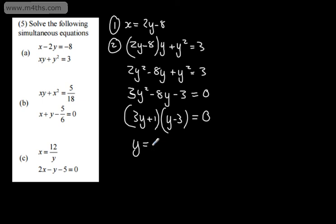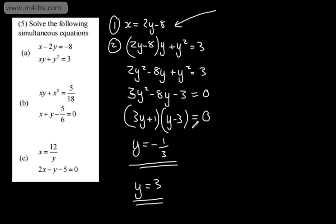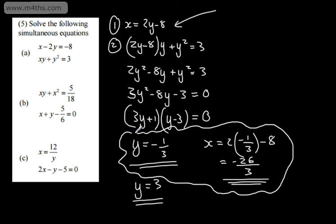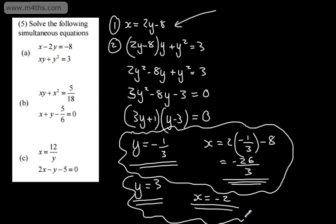So from here, we can see that y is going to be equal to negative one third, or y is going to be equal to 3. I've got my y values; all I need to do is find my x values. We've seen that equation 1 gives x equal to 2y minus 8. Substituting in, when y is negative one third, x will be 2 times negative one third minus 8, which gives negative two thirds minus 8, so x is equal to negative 26 over 3. When y is equal to 3, x is 2 times 3 minus 8, giving x equal to negative 2.